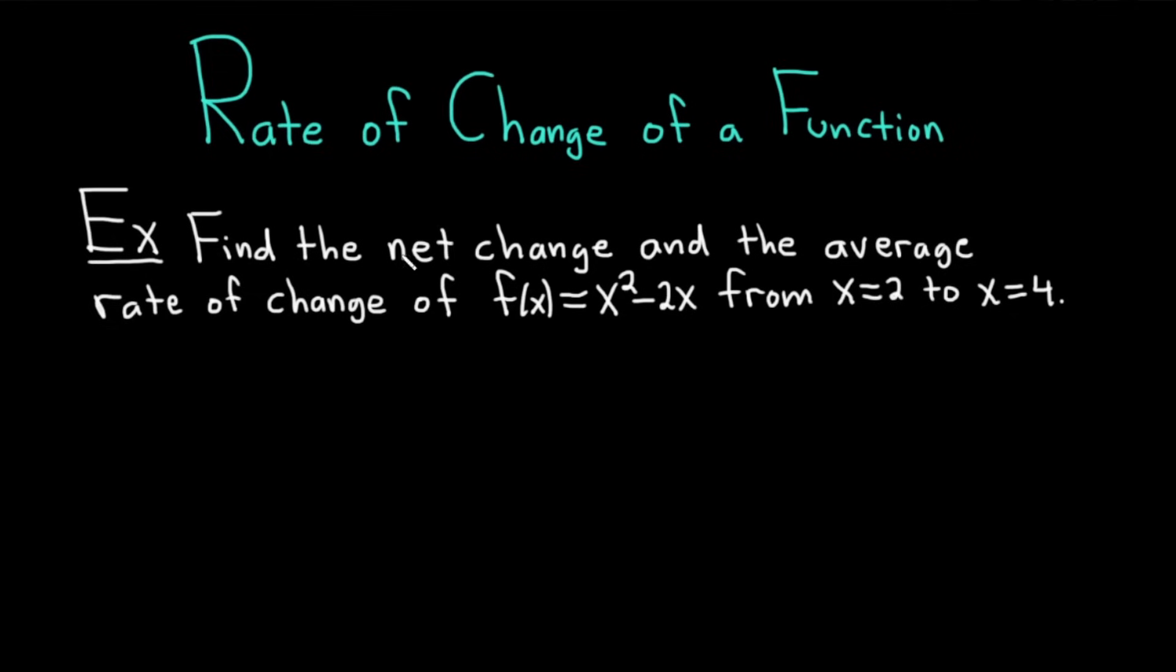The question says to find the net change and the average rate of change of f(x) = x² - 2x from x = 2 to x = 4. Let's work through it.